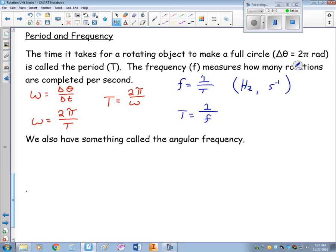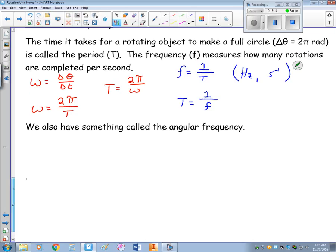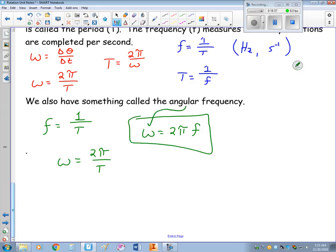We also have something called the angular frequency. Frequency is the number one divided by a period, and we saw that omega rotational speed was two pi divided by the period. Notice that omega can equal two pi times the frequency. That right there, that omega now becomes something called the angular frequency.